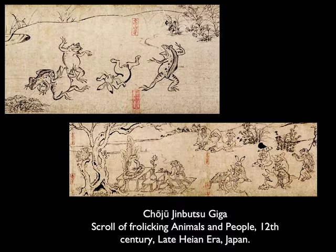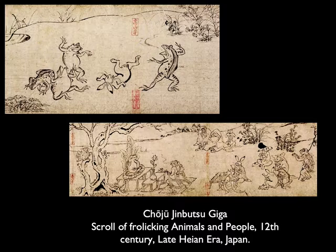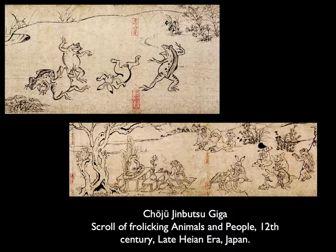Here is a scroll from Japan called Choju Jinbutsu Giga, the scroll of frolicking animals and people. Again we have animals acting like people in these elaborate scenes — parodies of Buddhist practices in Japan. We see a monkey saying a prayer to a frog Buddha. The folk tales or popular aphorisms associated with this scroll have disappeared and there's no writing on it explaining it. Obviously the creator believed the images were so self-evident they needed no further text.